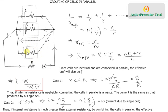Since all the cells are in parallel, connected between the same two points with the same EMF and same internal resistance, the potential difference between those two points is η itself. Applying Ohm's law, the total current through the external resistance R is I = η / total resistance = nη / (nR + r).